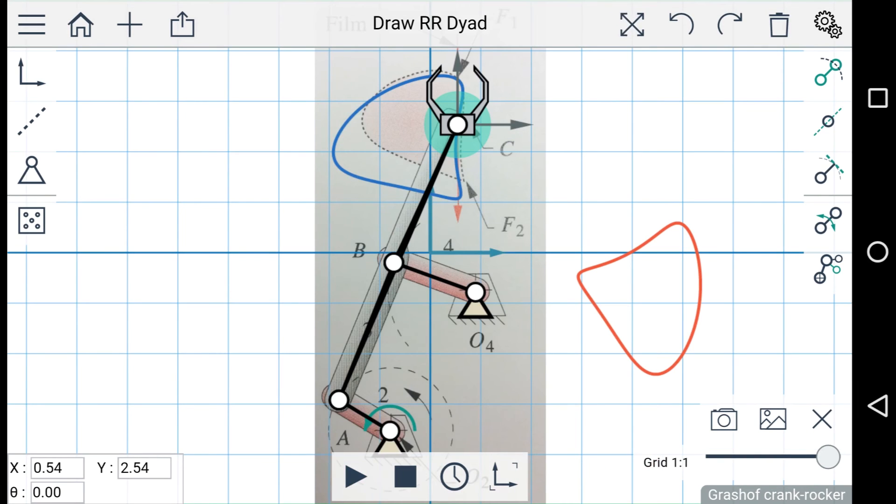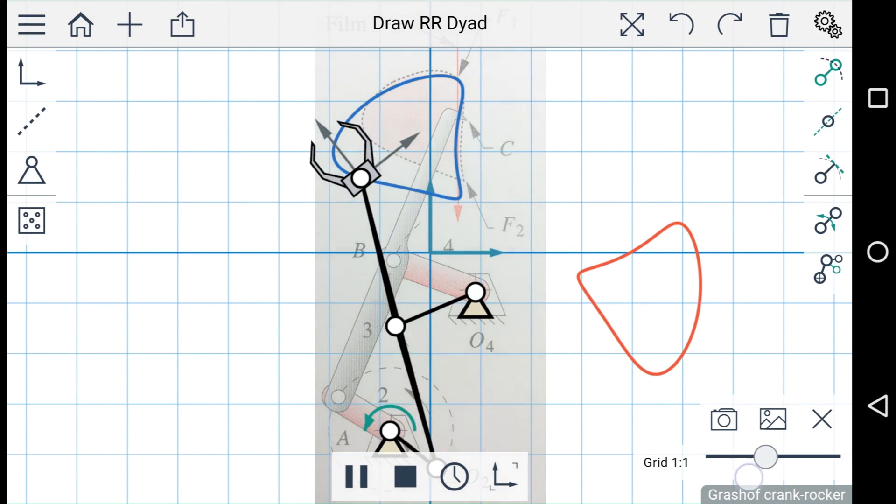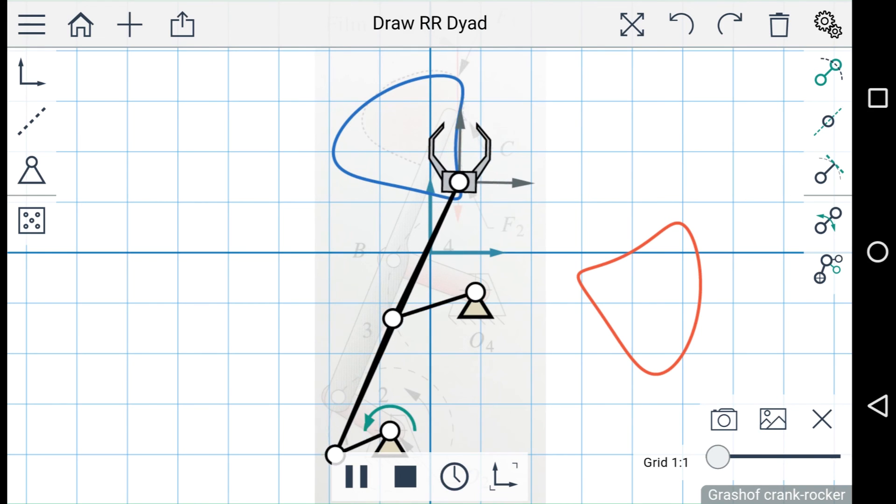And now that we've recreated this mechanism, we can press play and see what it does. You can clear the image by pressing the X in the visualization menu.